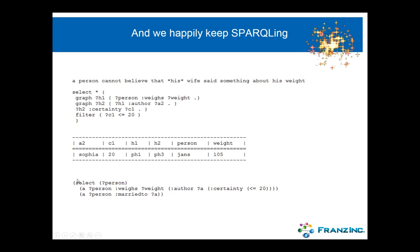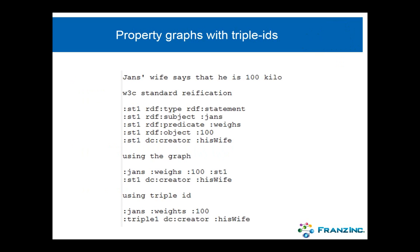To summarize: properties on properties can point to objects, and we can recursively apply. This is very flexible and very expressive if you are into property graphs. Not only can you use the fourth element, but triples in AllegroGraph actually have five elements because there's also a unique ID for each triple. Let's look at the statement that Jans weighs 100 kilos. The classical W3C reification has a statement of type statement where the subject is Jans, the predicate is weighs, the object is 100, and the creator is his wife.